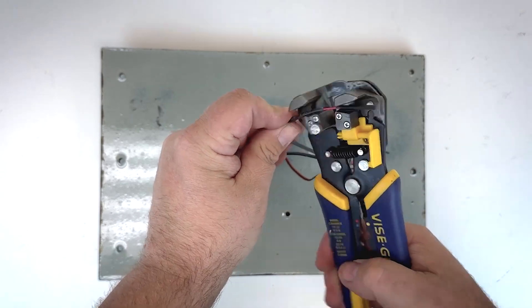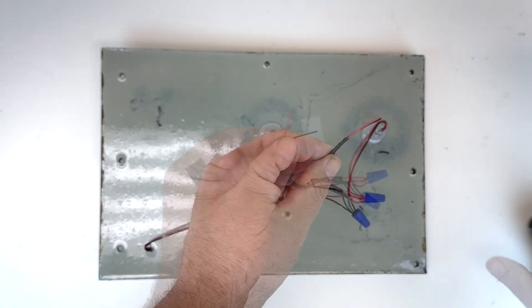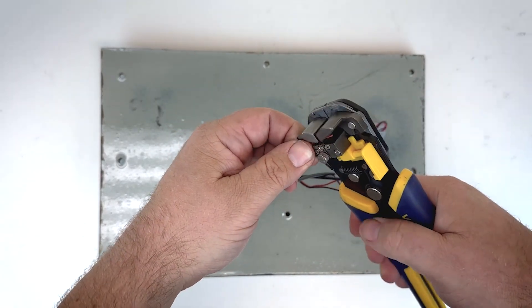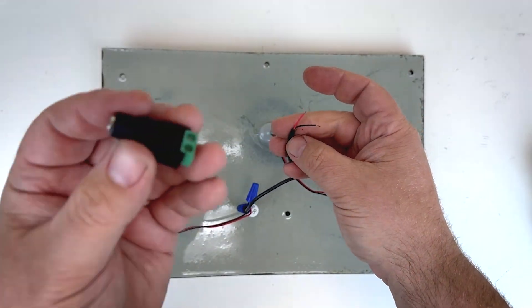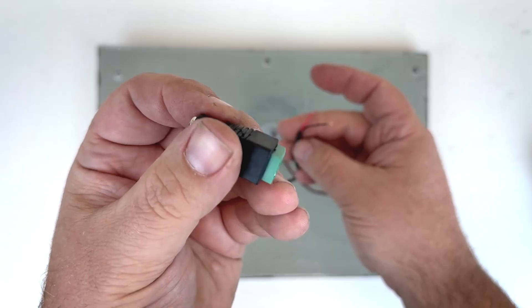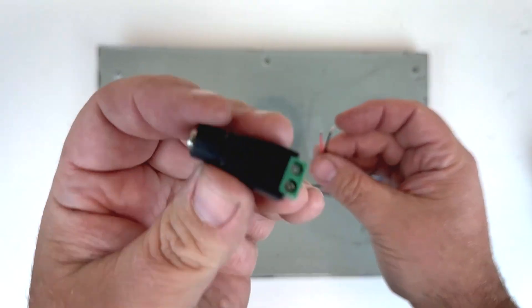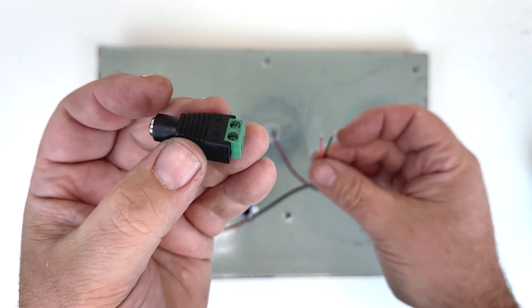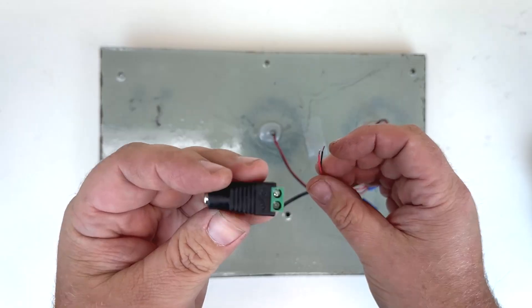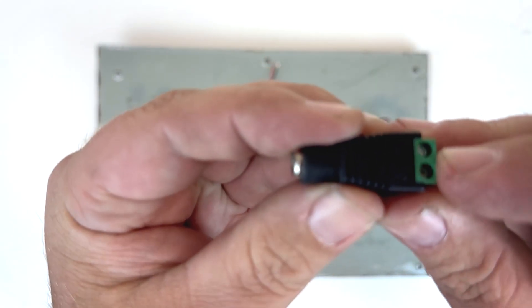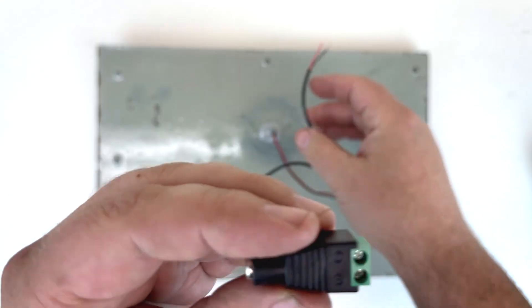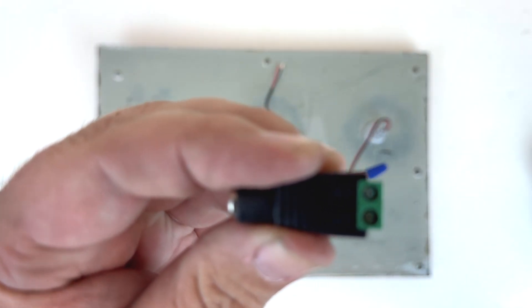So now we can just strip the end of that. Strip the red and the black as well. These I'm stripping shorter because we're actually going to use these to plug into an adapter like this. This is a power supply adapter. It's going to let us plug in the normal barrel plug from a power supply. So I'm just going to take our red and white wires. And if you see here, there's a plus and a minus sign here on the actual adapter. So I'm just going to take my red into plus and my black into negative.